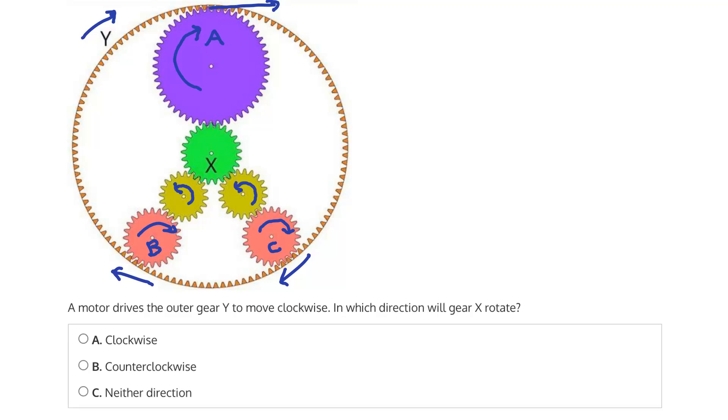So therefore, the answer is C, neither direction. This is an incomplete machine, or an unfunctional machine, because gear X is essentially getting two different physical instructions from the gears that are meshed with it.